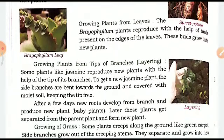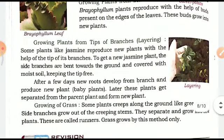Next is growing plants from tips of branches — this is called layering. Some plants like jasmine reproduce with the help of tips of their branches. To get a new jasmine plant, the side branches are bent towards the ground and pressed into the soil. After a few days, a new root develops from that branch, we cut it, and the part with the root is planted in the ground to produce a new plant. Later, these plants get separated from the parent plant and form a new plant.